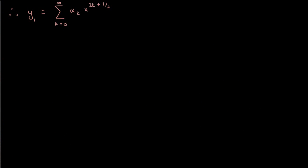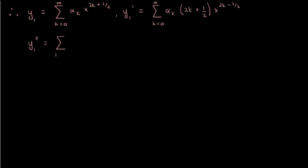Taking the first derivative of y1 gives the sum from k equals 0 to infinity of alpha sub k times 2k plus 1/2 times x to the power 2k minus 1/2. The second derivative of y1 is the sum from k equals 0 to infinity of alpha sub k times 4k squared minus 1 over 4 times x to the power 2k minus 3 over 2.